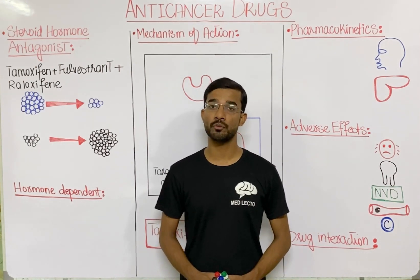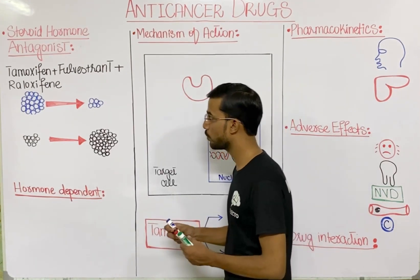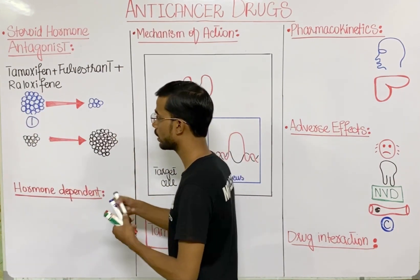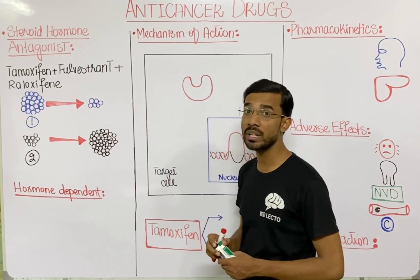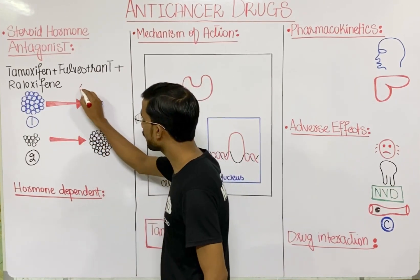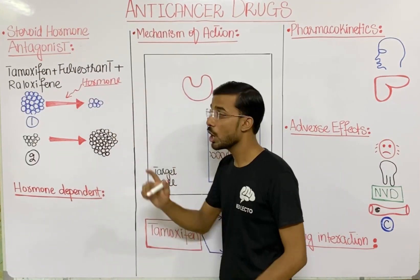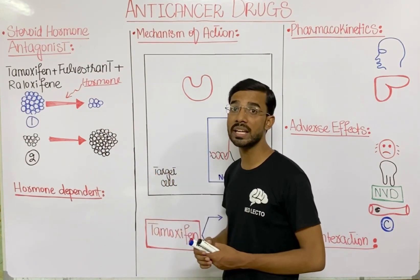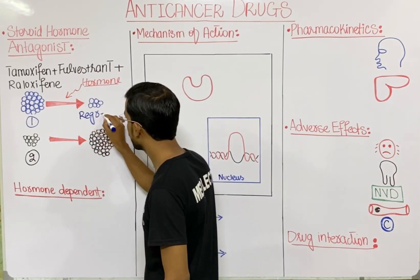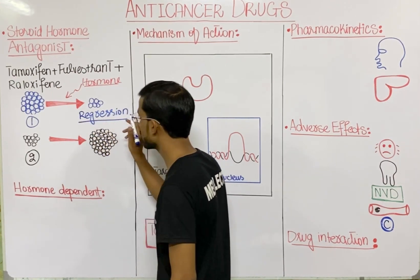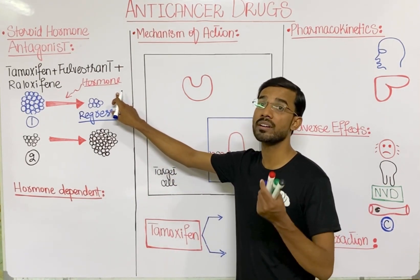Basically you will see two types of tumors that give different responses to hormones. Tumor one, when given a hormone stimulus, will start going towards regression — it reduces in size. This is called the hormone-independent or hormone-responsive tumor.